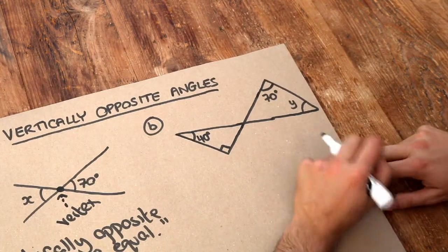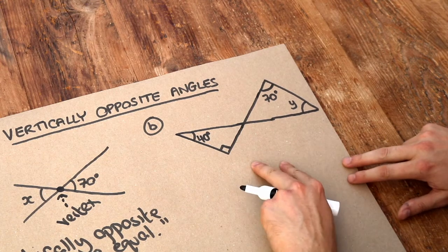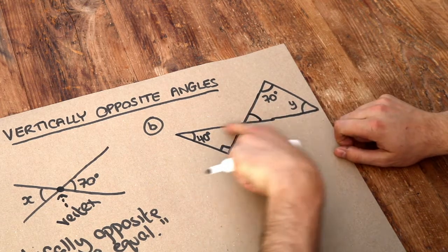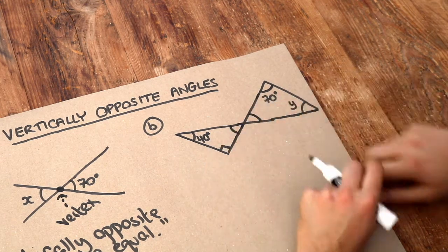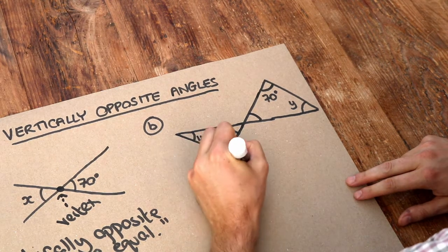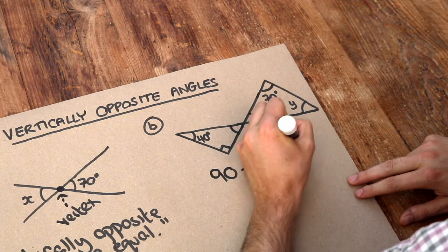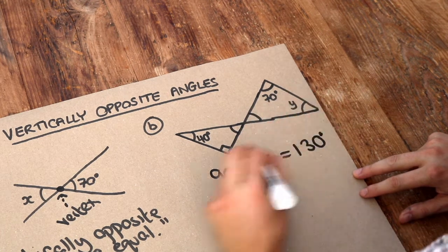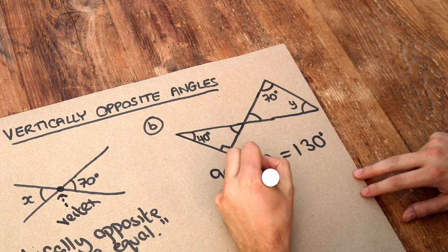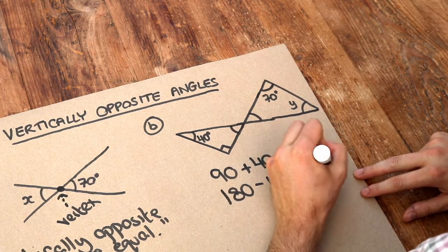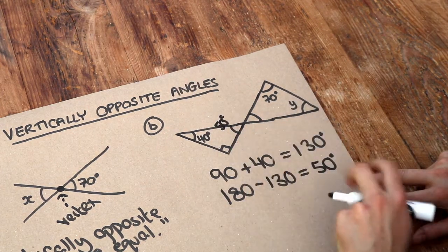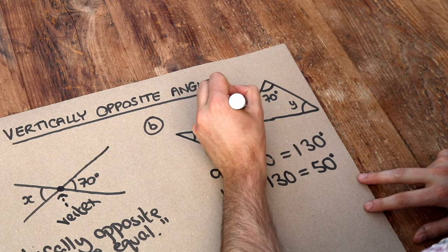What about this more problem-solving one here? Firstly, note that this angle here is vertically opposite this one — we've got this kind of x-shape and these two angles are opposite each other. Now that's 90 degrees and that's 40 degrees. If we add those together we get 130 degrees, and then if we subtract that from 180 — because remember the angles in a triangle sum to 180 — that gives us 50 degrees. So this angle here is 50 degrees, and since these angles are vertically opposite, this angle is also 50 degrees.